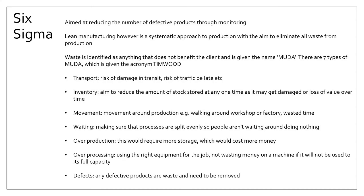The remaining types of muda are: Over-processing — using overly complicated equipment that you don't really need, when a simpler version would be more appropriate; and Defects — any defects in the product are waste, whether cracks, wrong shape, wrong colour, or surface damage. All of these are the kinds of areas that lean manufacturing tries to identify and eliminate.